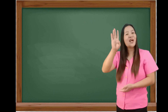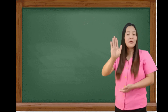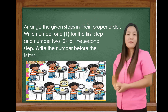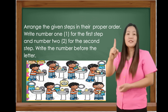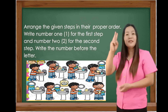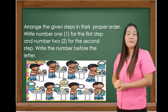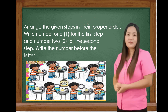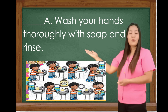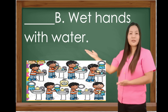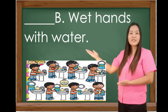For numbers 4 and 5, you are going to arrange the given steps in the proper order. Write number 1 for the first step and number 2 for the second step. Write the number before the letter. Letter A: Wash your hands thoroughly with soap and rinse. Letter B: Wet hands with water.